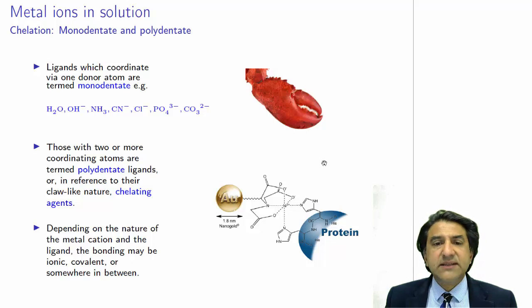So chelates are molecules that can join onto a metal, and the word chelate comes from the Greek word for claw. So here's a claw, and essentially these chelate molecules are like claws that surround the metal ion. Here's one particular chelate over here.